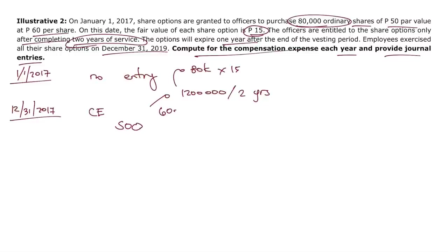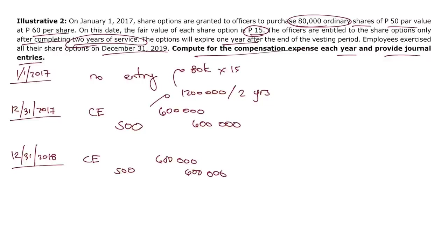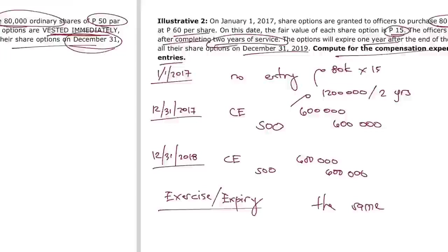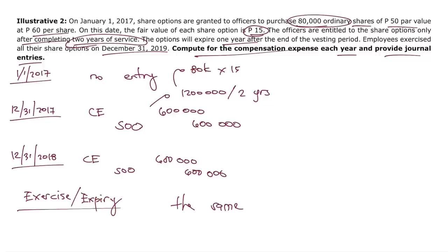At the end of 2017, we recognize compensation expense of 600,000 pesos. On December 31, 2018, another 600,000 is recognized — completing the two-year vesting period. The journal entries for exercise and expiration of the share options are the same as in Illustrative Problem 1. Key point: if options vest immediately, recognize the total compensation expense immediately; if there is a vesting period, allocate over that period.